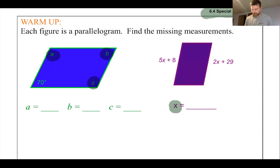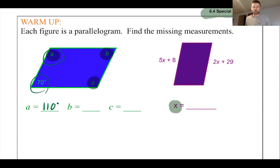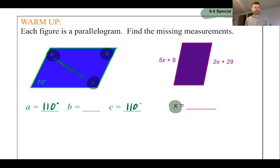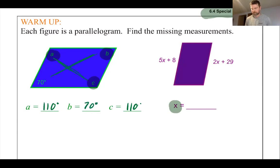A is going to be 110 degrees because in a parallelogram, consecutive angles add to 180. C is also going to be 110 degrees. In a parallelogram, opposite angles are equal, which means B, being opposite of 70, is also going to be 70 degrees.